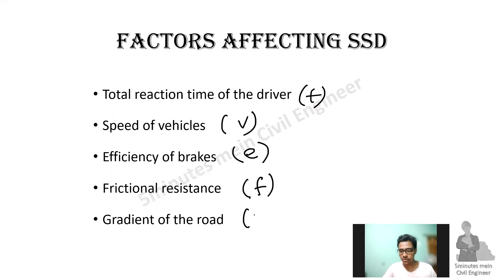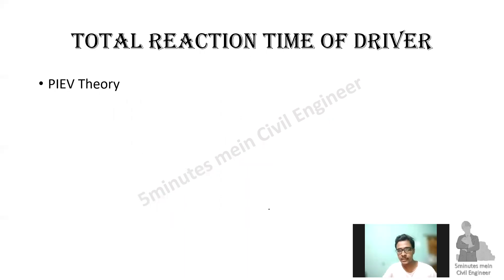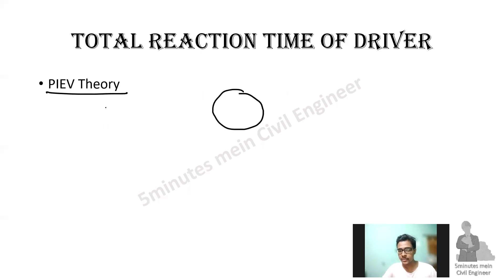Normally, the slope is considered as zero on flat roads. We can calculate using a theory called PIEV — which stands for Perception, Intellection, Emotion, and Volition. This is the PIEV theory used to determine the total reaction time of the driver.